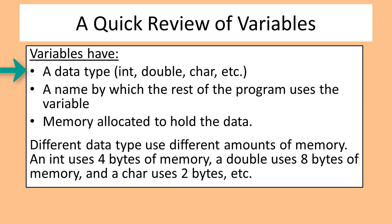Variables have a data type such as int, double, character, etc. — a name by which the rest of the program uses the variable memory allocated to hold the data. Different data types use different amounts of memory: an int uses 4 bytes of memory, a double uses 8 bytes of memory, and a character uses 2 bytes.